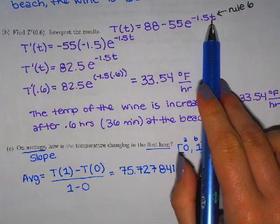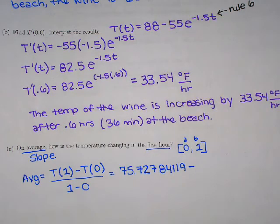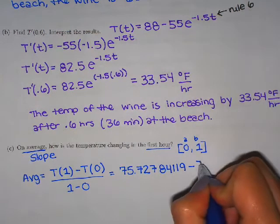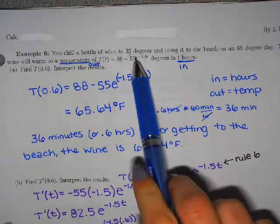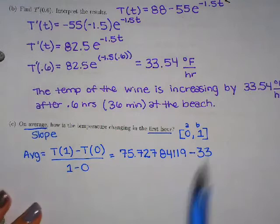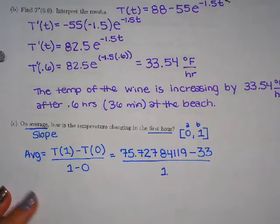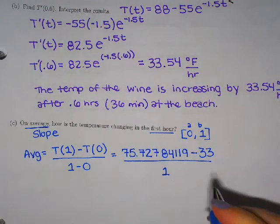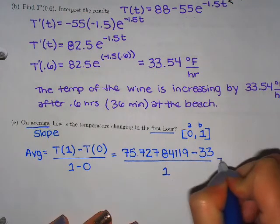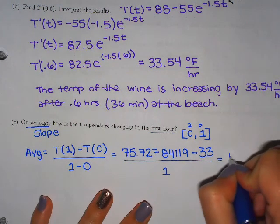We'll plug in one minus plugging in zero is nice. E to the zero is just going to be one. So you have 88 minus 55 times one, which is 88 minus 55, which is 33. Hey, I didn't even need to plug that in. That makes sense. They told me that when we got to the beach way up here, that it was 33 degrees. So that's why we get 33 when we plug in zero. Kind of already told us in the problem.